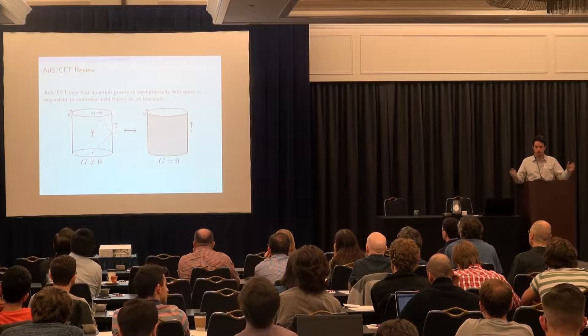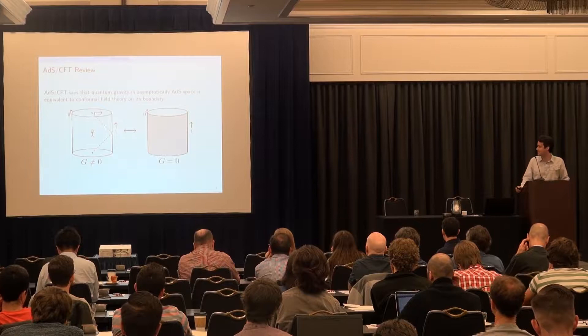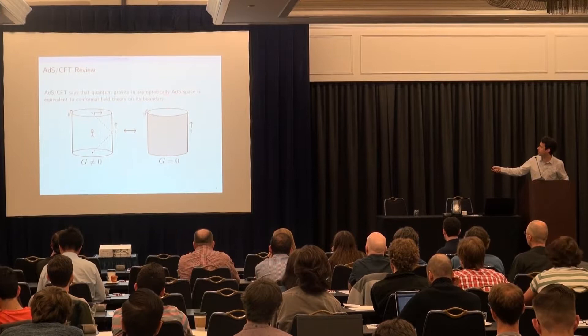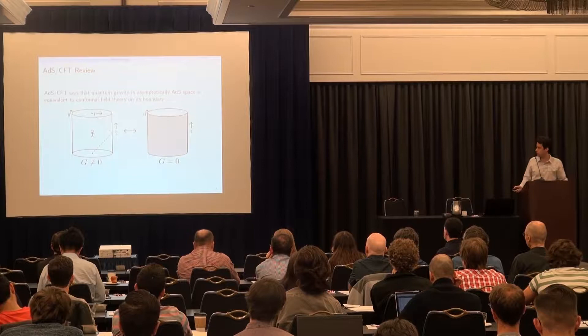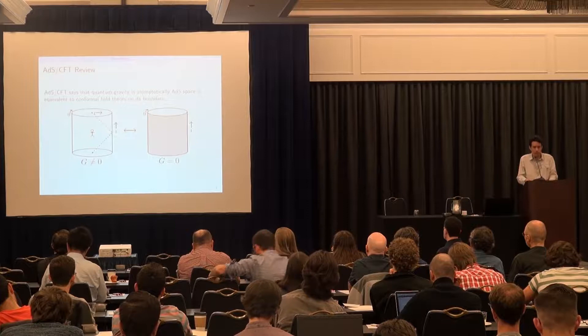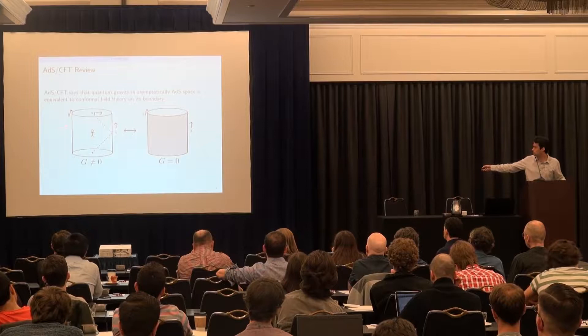Let me tell you a little bit about ADS-CFT. ADS-CFT says that quantum gravity in asymptotically anti-de-Sitter space is equivalent to a conformal field theory on the boundary. You can think of it as a duality between the soup inside of a can and the metal can — the gravity side is the soup, the interior of the cylinder, where G Newton is not zero.